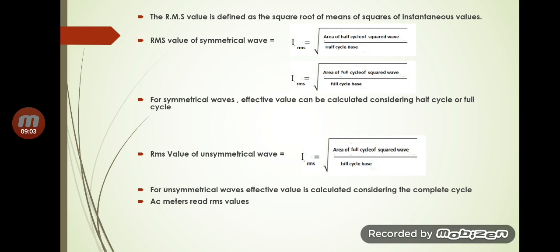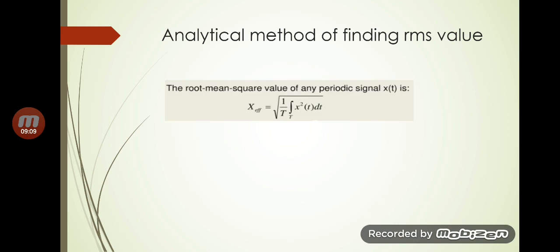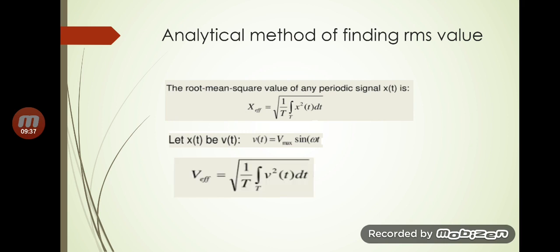AC meters actually rate RMS values. Using the analytical method, the root mean square value of any periodic signal x(t) is: X_effective equals the square root of (1/T) times the integral from 0 to T of x²(t) dt. For voltage, where v(t) equals Vm sin(ωt), V_effective equals the square root of (1/T) times the integral from 0 to T of V²(t) dt.